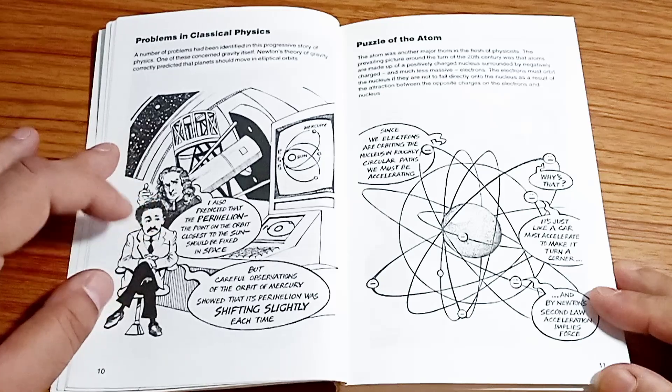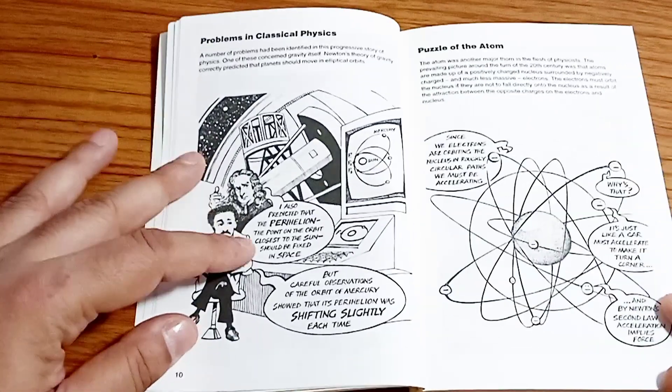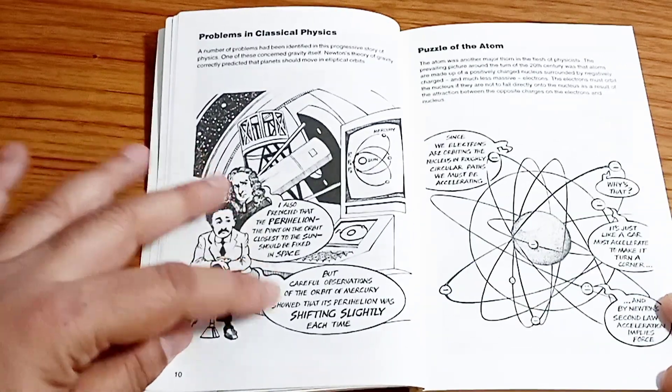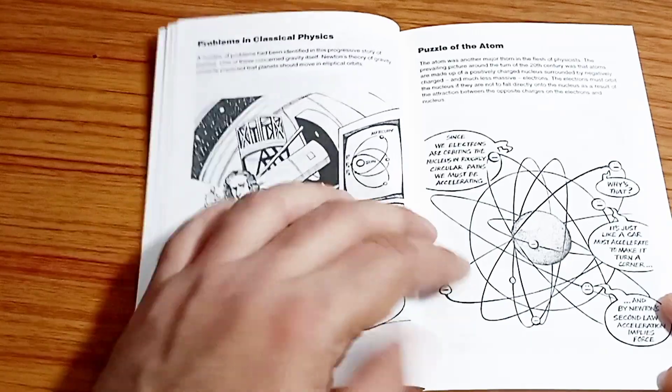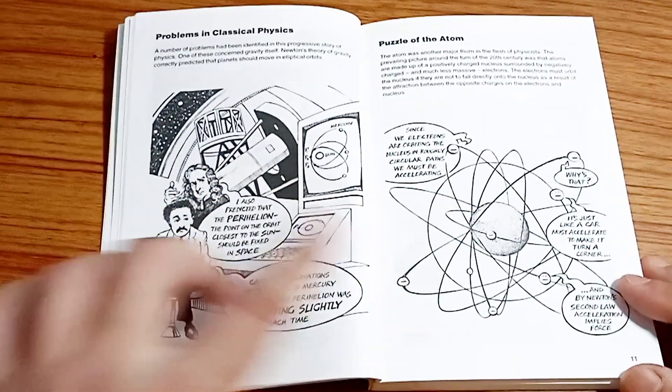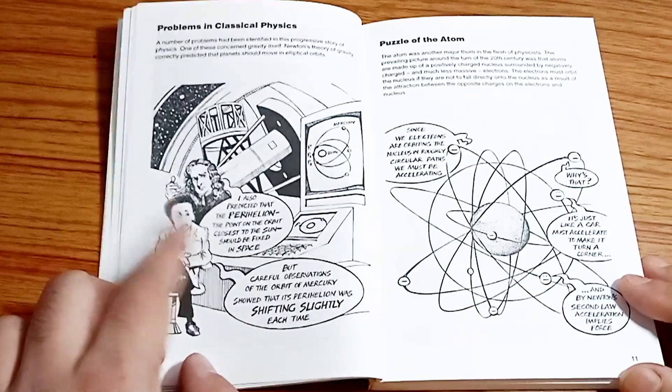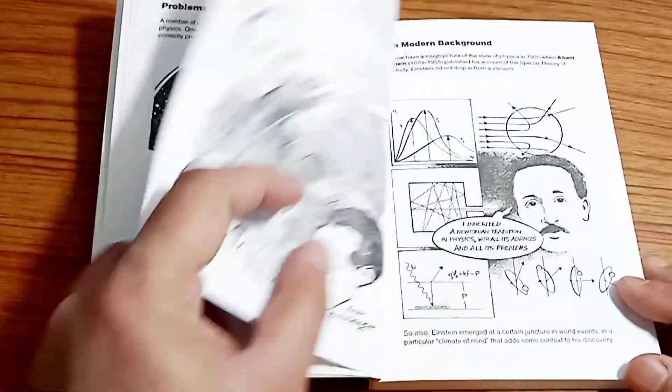The problems in terms of classical physics. So what was that? So here you see Einstein delving deep into the problems of the perihelion and then there's a shift and then the puzzle of the atom. So the quantum realm here and the macroscopic realm, this is being dealt.